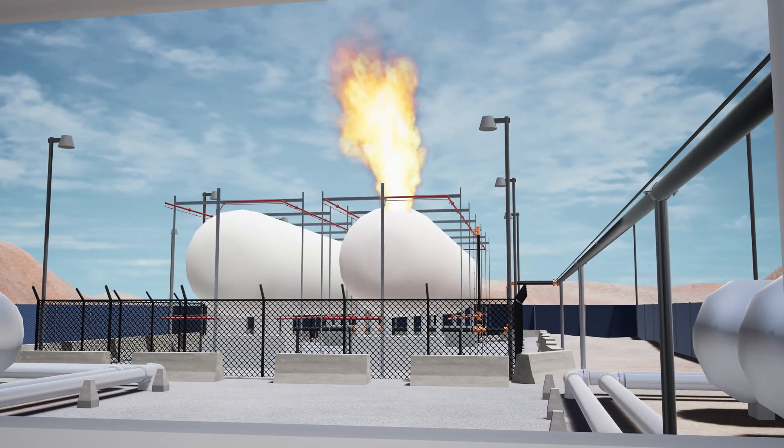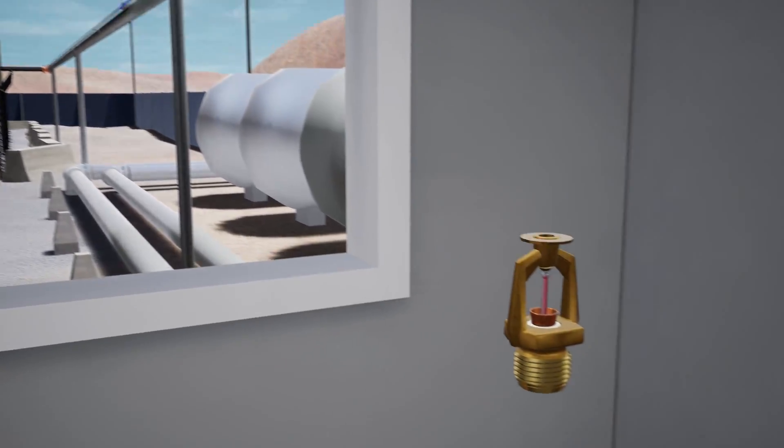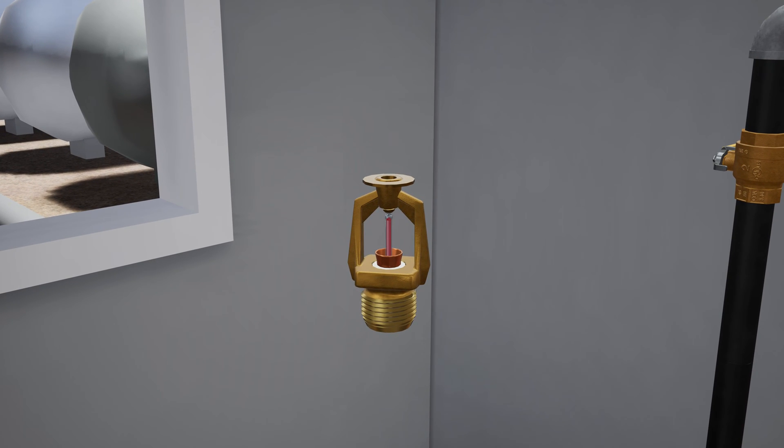In a scenario where a fire has started in or near the storage tanks and the heat increases, the BK800 fixed temperature release activates, releasing water pressure from the pilot line.